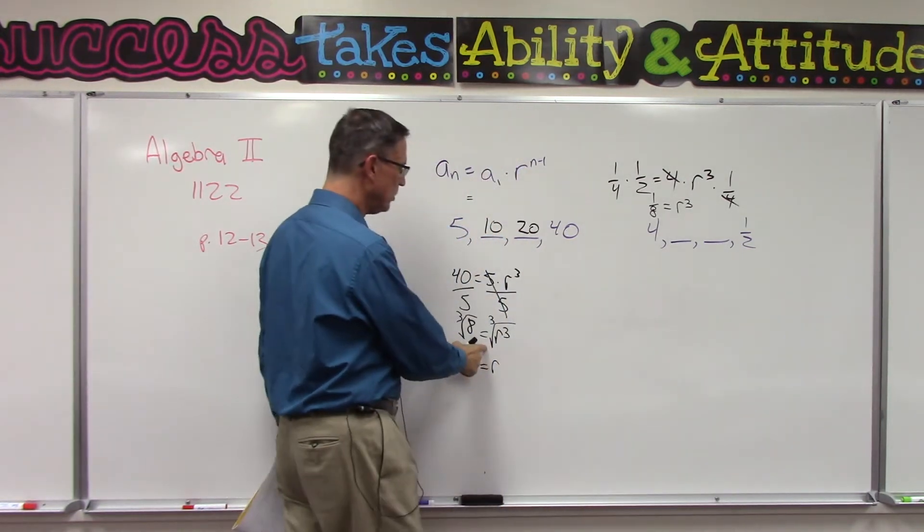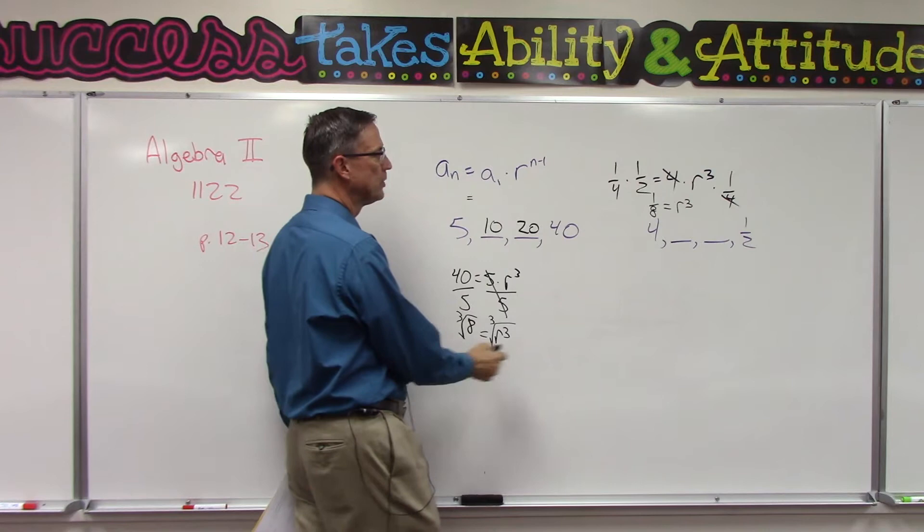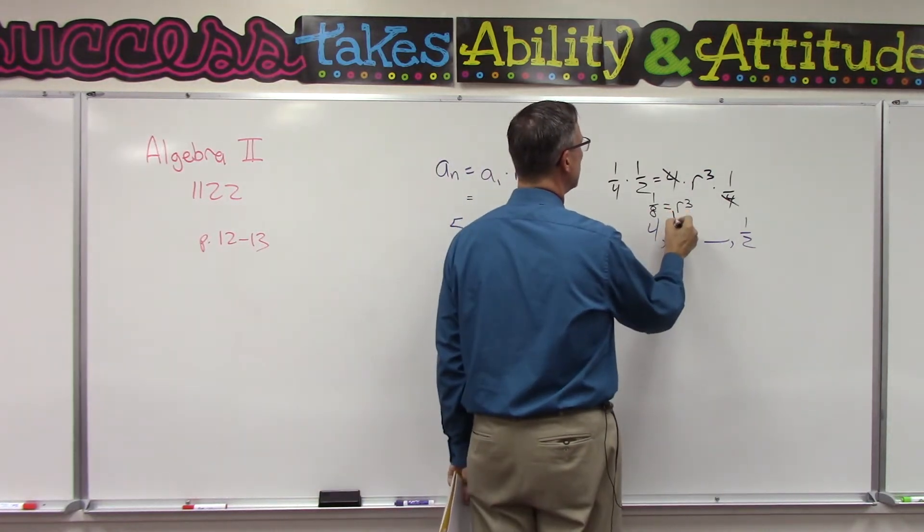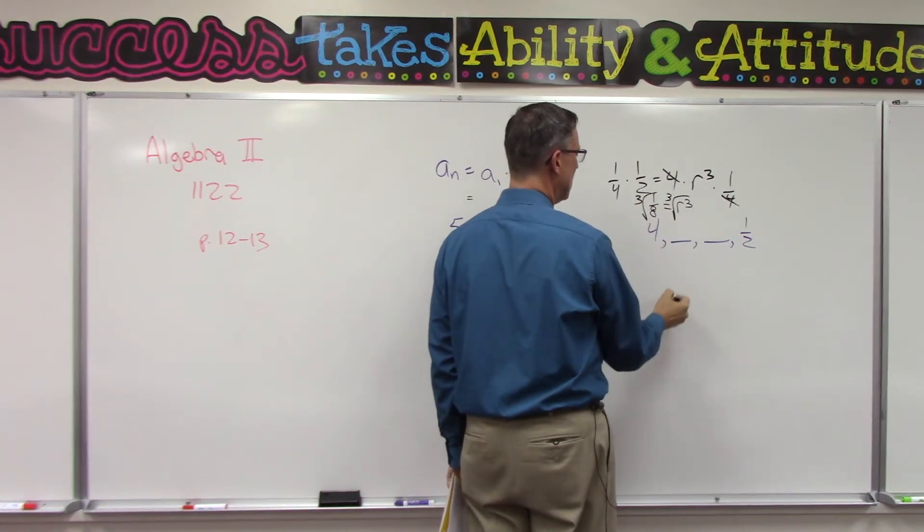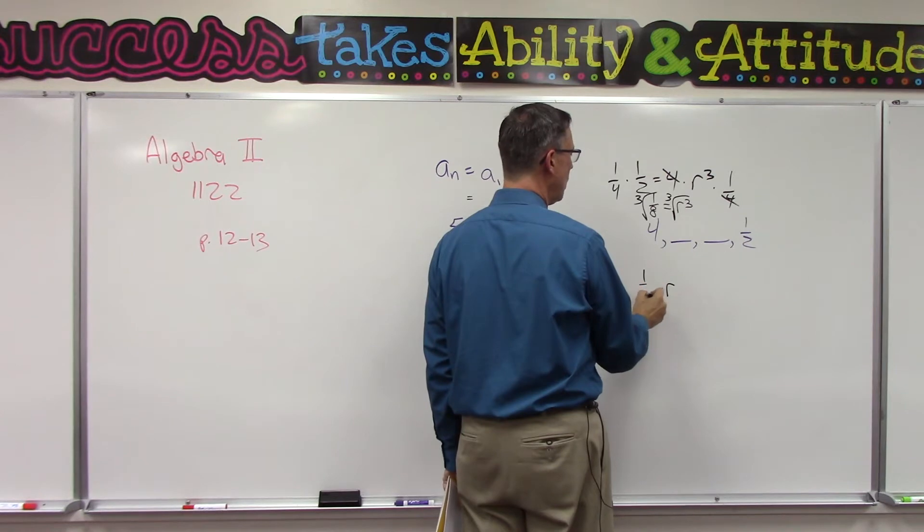Same thing we did here. We're going to do the third root of both sides. So now the r pops out, and the third root of one eighth is one half.